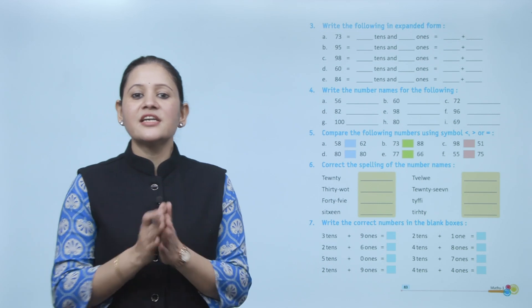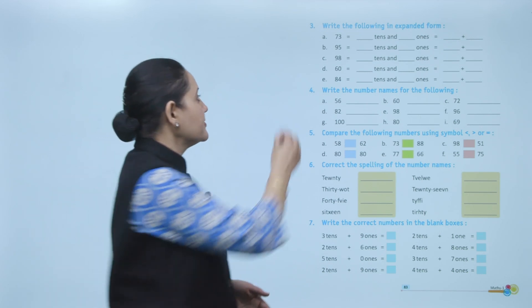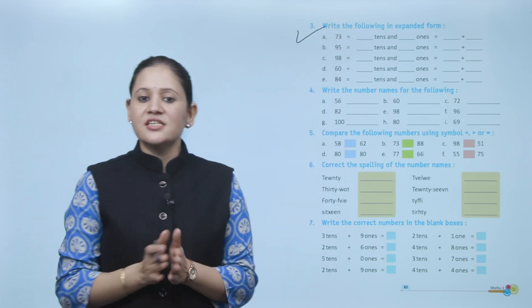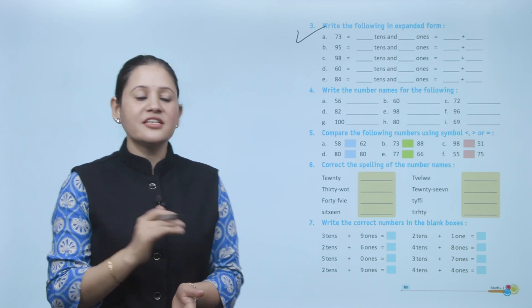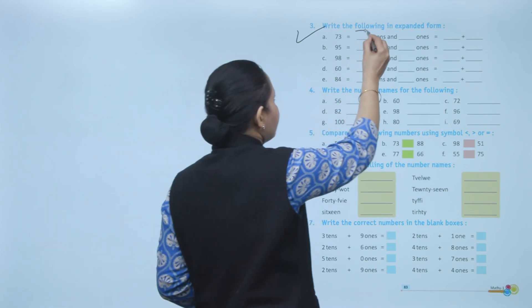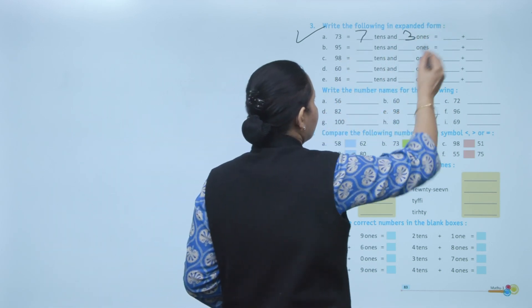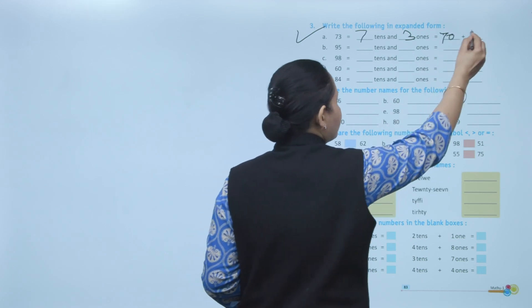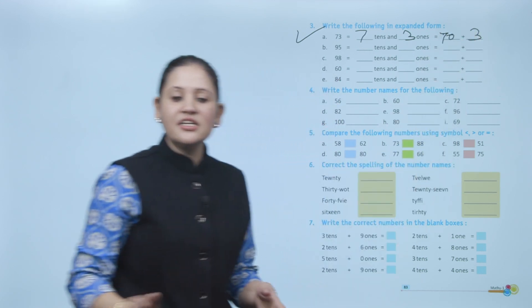Next, write the following in expanded form. 73 means 7 tens and 3 ones. 7 tens means 70, and 3 ones means 3. So 73 equals 70 plus 3.